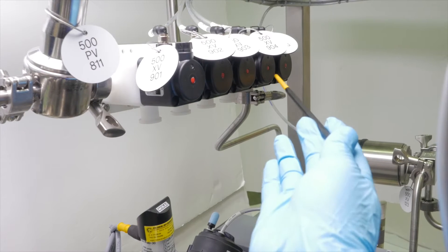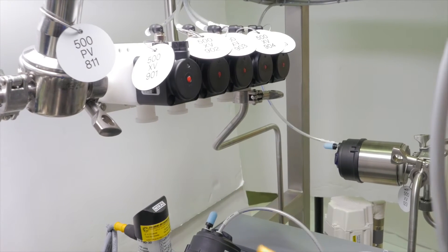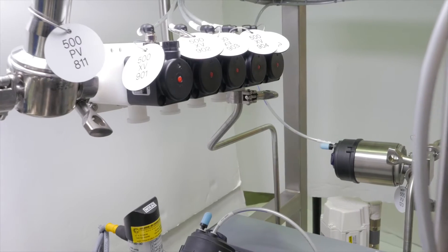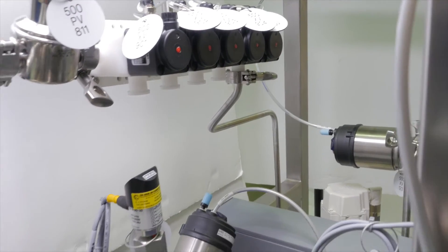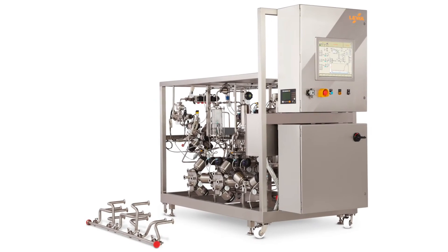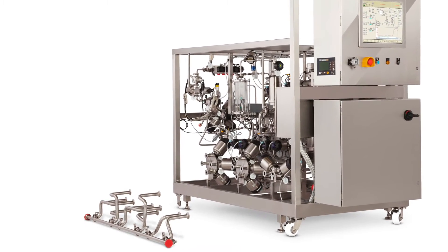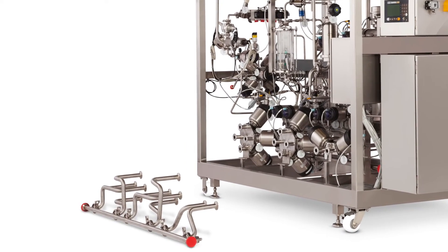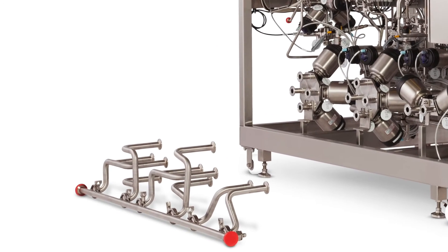The outlet valve block includes four fraction valves and one waste valve. Customers have the option to add either two or six additional valves. An optional CIP manifold that attaches to the inlet and outlet valves can be added to facilitate cleaning the system.